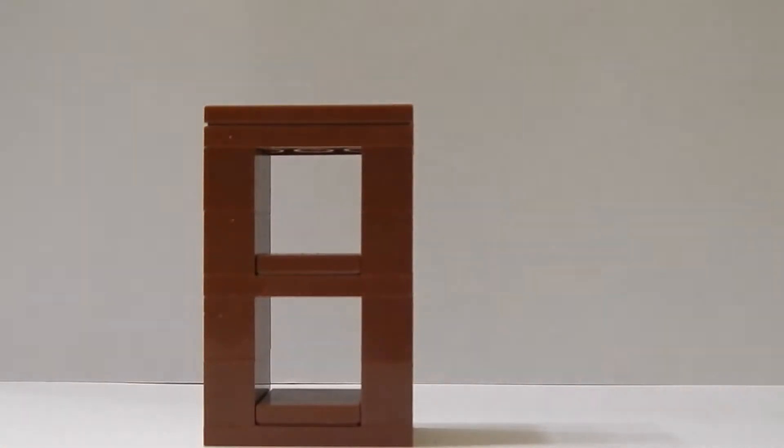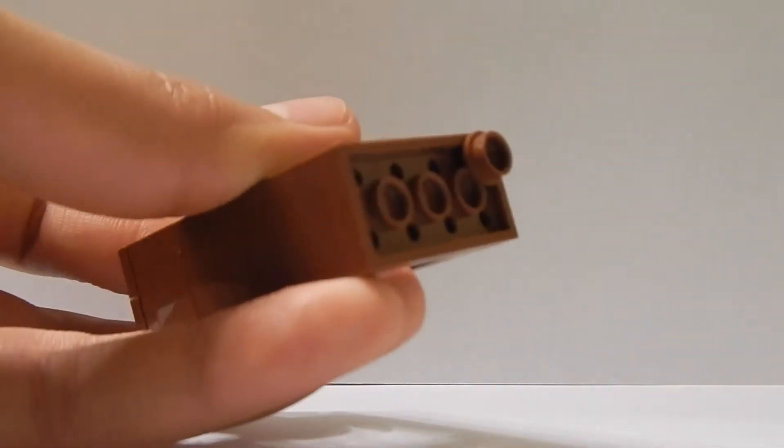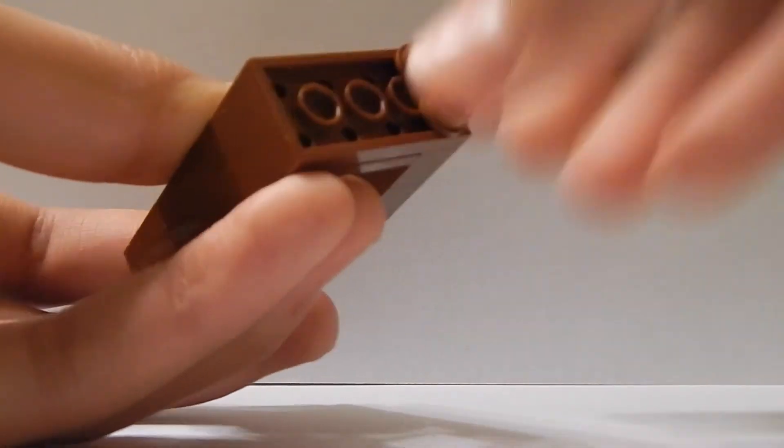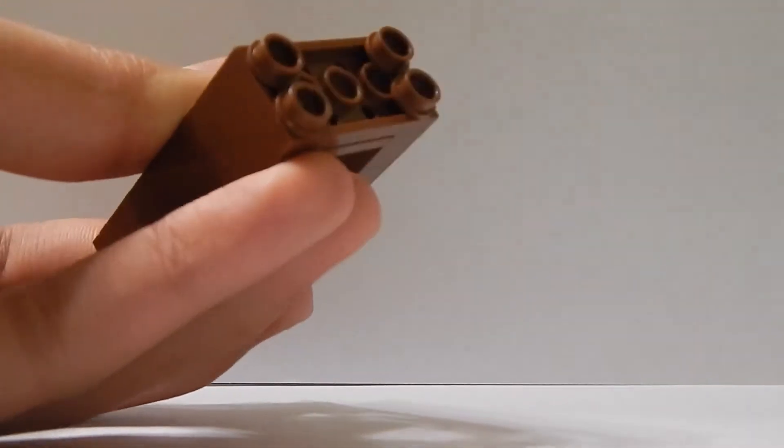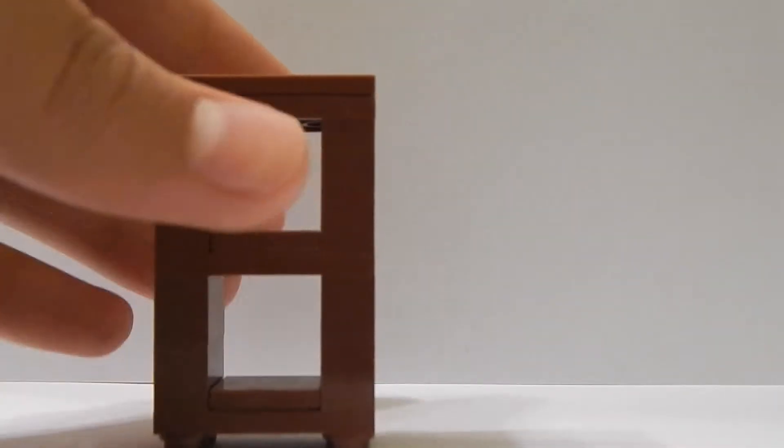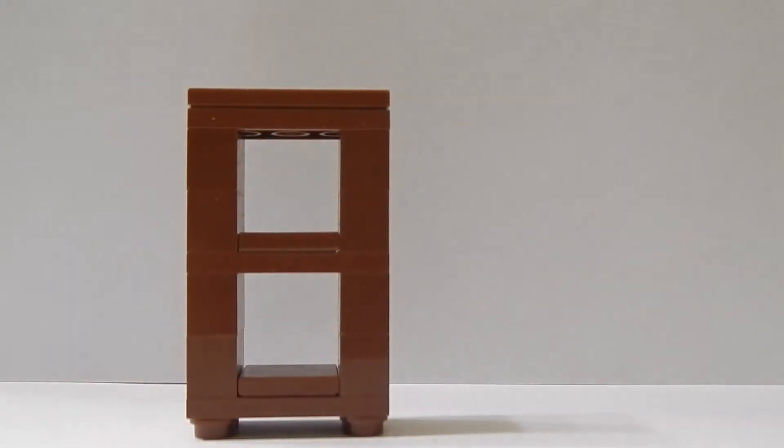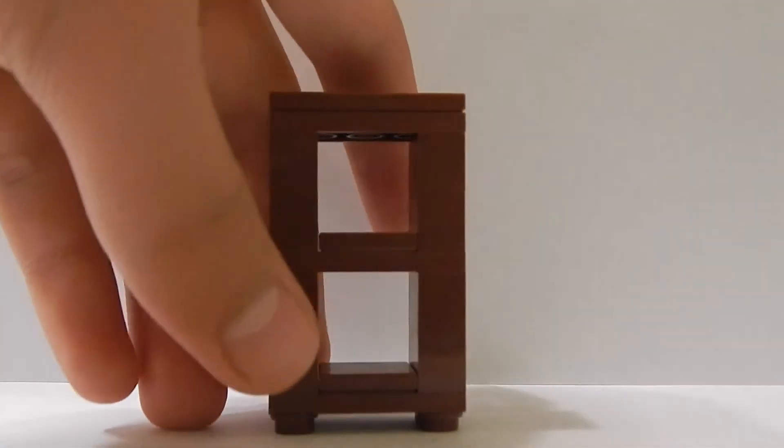You can also add legs to the bottom of your bookshelf, so that's what I'm going to do right now. I'm basically just placing studs on the bottom corners. So now you have a nice little place where your bookcase can stand when you have some legs for your bookcase.